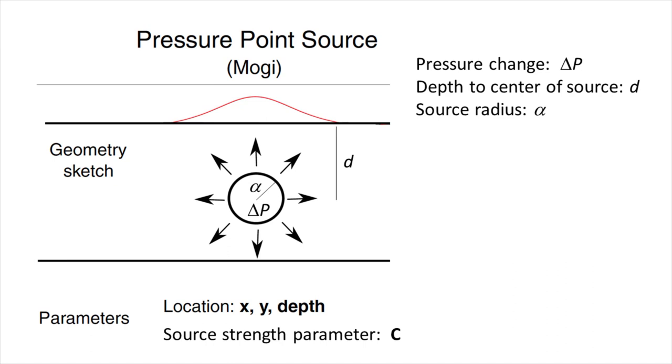Four parameters are needed to fully describe the model behavior. There are three parameters for the location of the source: latitude, longitude, and its depth. The source strength is the fourth parameter. It depends on both the properties of the source as well as the surrounding host rock, that is, the properties of the elastic half-space.